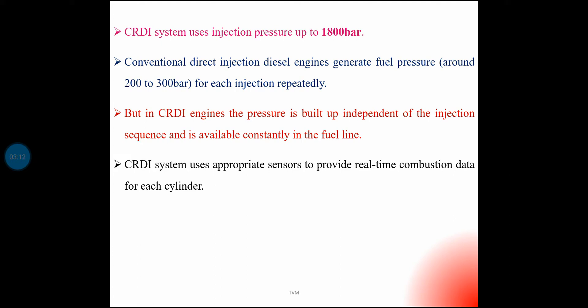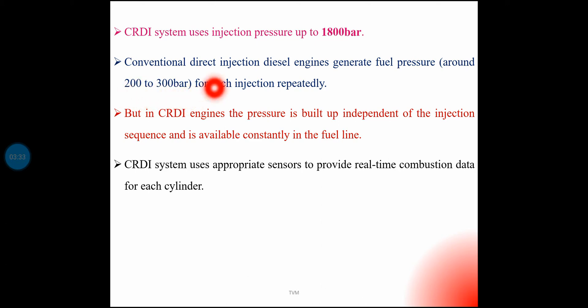Conventional diesel engines build up around 200 to 300 bar for each injection separately. But in CRDI engines, the pressure is built up independent of the injection sequence and is available constantly in the fuel line. The CRDI system uses 1800 bar, and modern systems use up to 2000 bar.